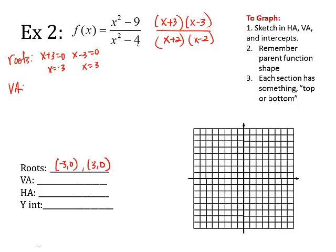Vertical asymptotes, set the denominator of factors and equal to zero. So x is negative two, x is two, make sure you're putting things in the correct form.